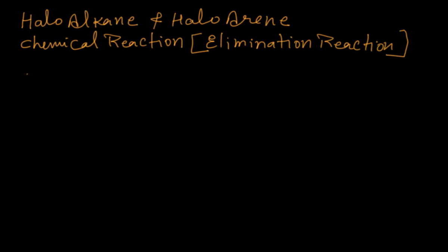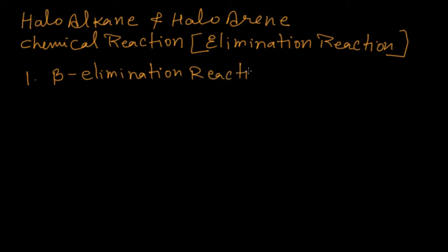Hello students, today we are going to do the chemical reactions of haloalkane and haloalkene. In the last class we did nucleophilic reactions, now we are doing elimination reactions. In elimination reactions, haloalkane and haloalkene show beta elimination reactions. Beta elimination reaction is a very important reaction to understand. If we take haloalkane CH3CH2Cl, it can react in two ways.